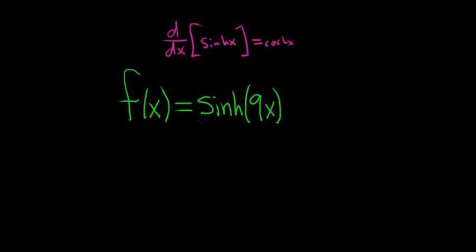The outside function here is sinh, and the inside function is 9x. When we take the derivative using the chain rule, we take the derivative of the outside. The derivative of sinh is cosh.